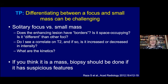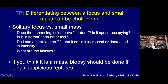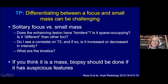All these cases show how difficult it can be to differentiate a focus from a small mass. I ask: does the enhancing lesion have borders—is it space-occupying? Does it look different than the other foci? Do I see a correlate on T2 weighted sequence, and is it increased or decreased in signal? Decreased T2 signal intensity makes me more concerned. I also look at kinetics: below threshold gives less concern, but even type one doesn't necessarily reassure me much. If I think it's a mass, I tend to go ahead and biopsy to make sure it's not a malignancy.